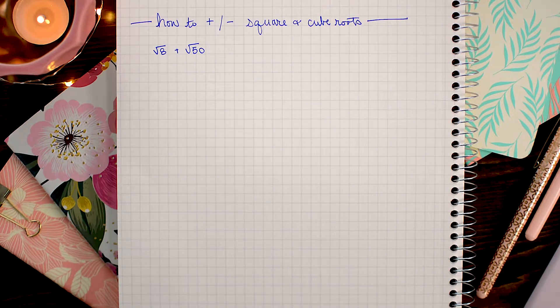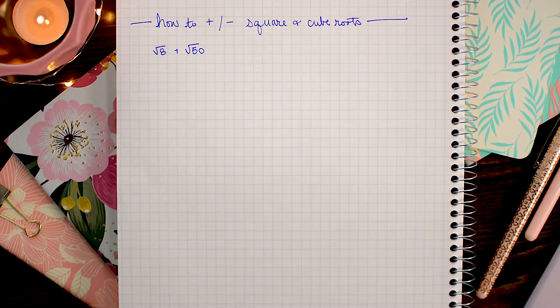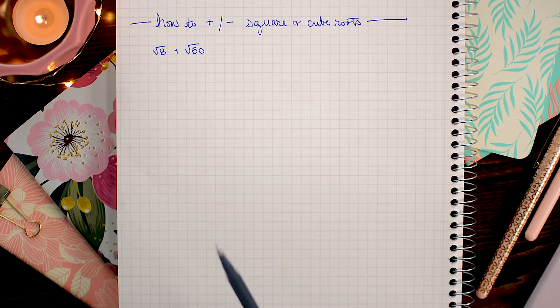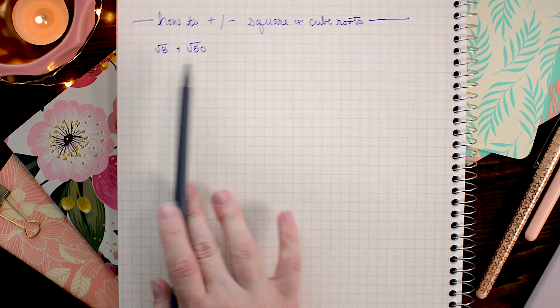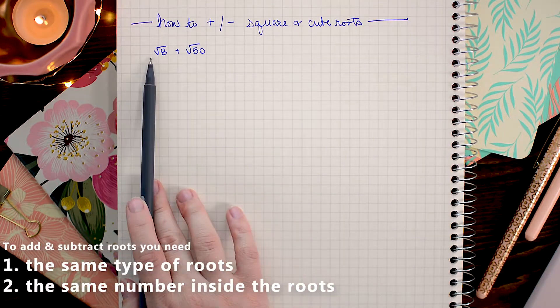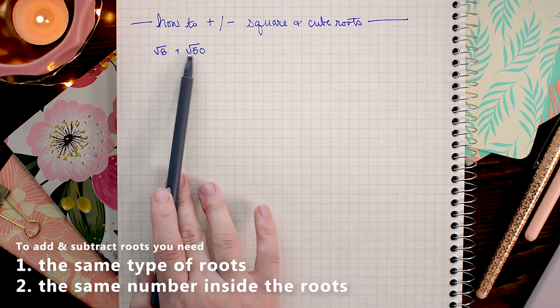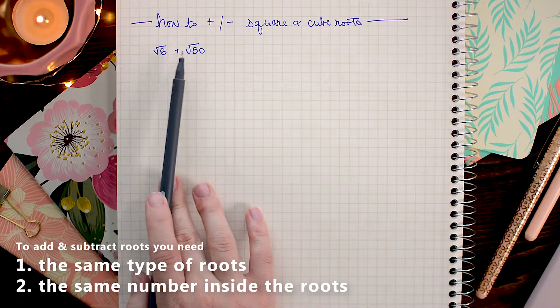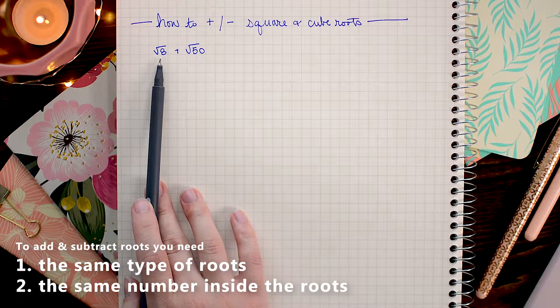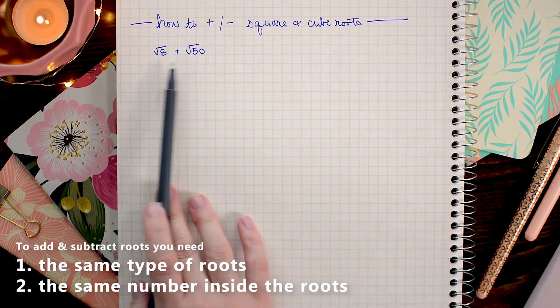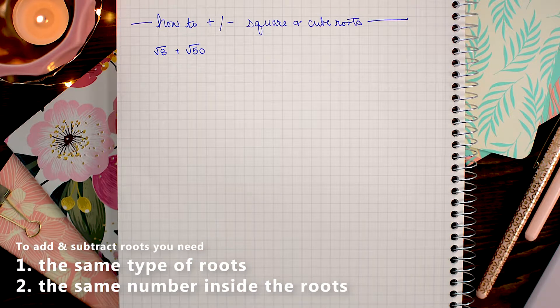Now what's important to remember is that we cannot add and subtract square roots or cube roots or any type of roots if the number underneath the root is not the same and if the type of root is not the same. So they both, in this case, they both need to be square roots, and we need to simplify these so that both the number under this root and under this root are the same.